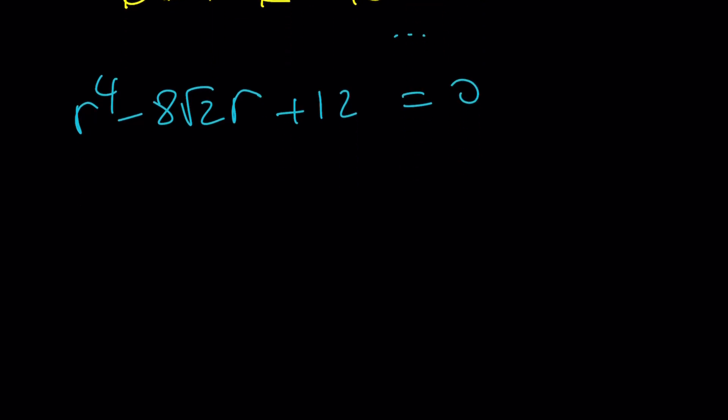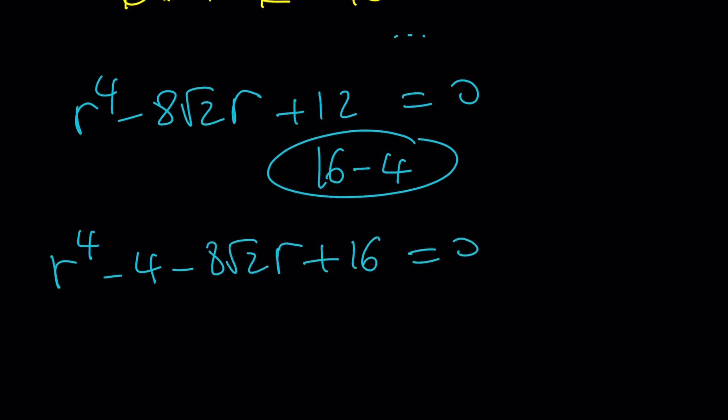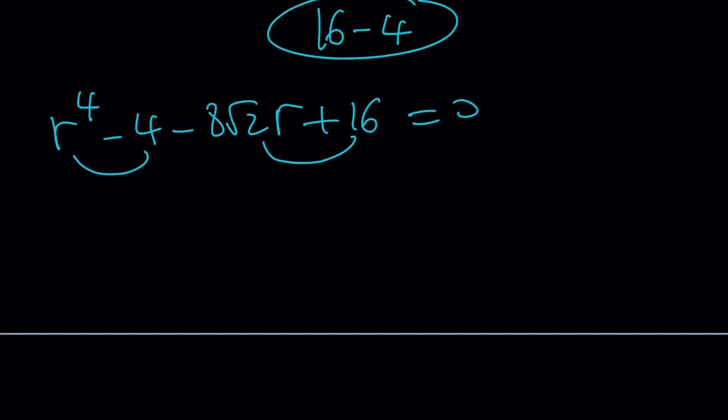We have r⁴ - 8√2r + 12 = 0. Now I realize that this expression, based upon the number that we have, like 8√2 and the 12, and we have a fourth power, I want to split 12 into 16 - 4. You might be questioning why, right? Well, I'm going to put the 4 with the r⁴, and 16 is going to stay with 8√2r. And then this will be factorable by grouping.